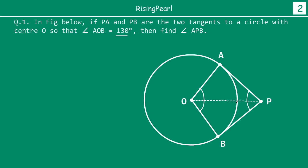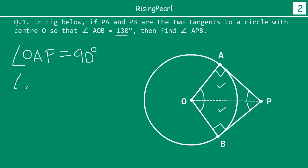The moment we join OP, we recognize there are now two triangles — this triangle and this triangle. In these two triangles, angle OAP equals 90 degrees and angle OBP equals 90 degrees. The reason both these angles are 90 degrees comes from the first theorem: PA is a tangent and OA is a radius, so the angle between them is 90 degrees. For the exact same reason, angle OBP is also 90 degrees.